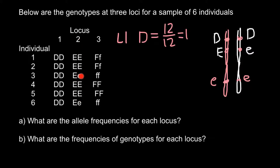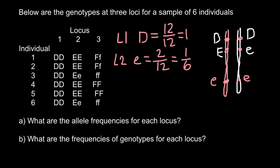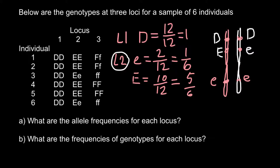Now let's analyze locus two. Here we see two types of alleles: one recessive and one dominant. Counting the recessive alleles, we have one and two out of 12. So at locus two, recessive allele e equals 2 out of 12, or 1 out of 6. And at the same locus, the frequency of capital allele E would be 10 out of 12, or 5 out of 6.